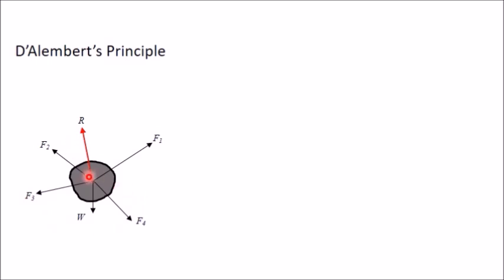So let's take this resultant. Suppose this is the resultant of all these five forces F1, F2, F3, F4, and W. Then this body will start accelerating in the direction of this R. Now according to Newton's second law, we know that resultant force will be equal to mass into acceleration, where M is the mass of the rigid body and A is the acceleration. In this particular case, you cannot apply sigma Fx equal to 0 and sigma Fy equal to 0, because this body is not in equilibrium.